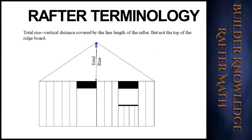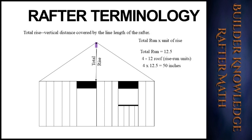The total rise is the vertical distance covered by the line length of the rafter — it is not the height to the ridge board. To calculate the total rise, take the unit of rise in inches and multiply by your total run in feet. In this example, the rise in inches is 4 and the total run in feet is 12.5, so 4 × 12.5 = 50 inches. To get the ridge height, add the HAP (height above plate) in inches. With a total rise of 50 inches and a HAP of 4.25 inches, the ridge board height is 54.25 inches.